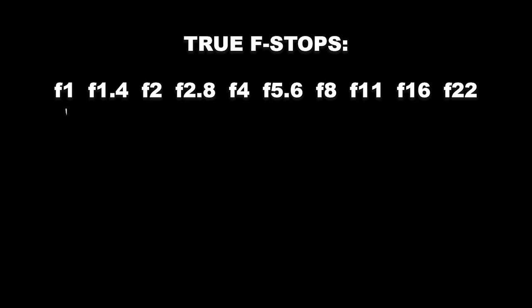These are referred to as true stops because as you go up or down the scale, you either multiply by 2 or divide by 2 the amount of light coming into the camera. Therefore, an aperture of f1 allows twice as much light to enter the camera as an aperture of f1.4, and an aperture of f11 allows half the amount of light of an aperture of f8.